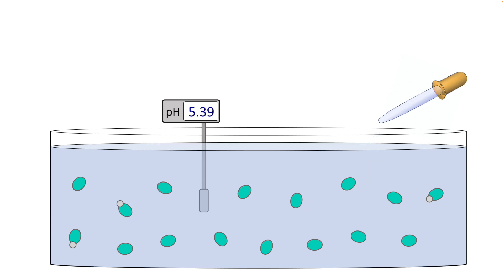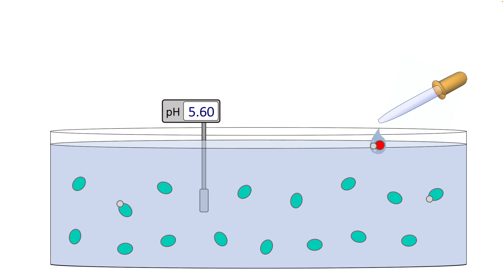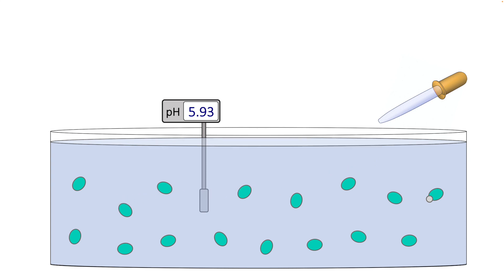And this keeps happening until we've added so much base that we end up exceeding the buffer's buffering capacity. And at that point, the pH undergoes a very dramatic increase to a high level and the buffer no longer functions.